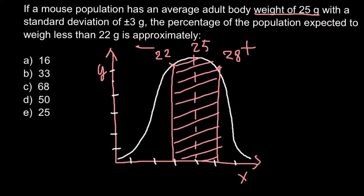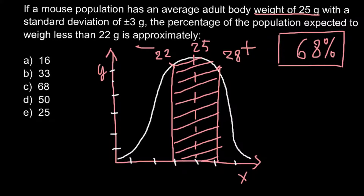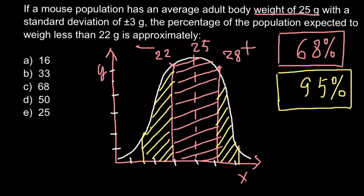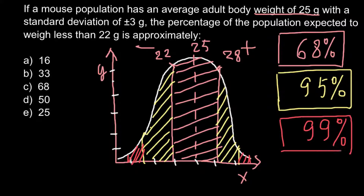Everything you need to know is that one standard deviation covers about 68 percent of the total distribution of the trait. Two standard deviations cover about 95 percent of the distribution, and three standard deviations cover about 99 percent of the trait distribution. Remember these three numbers.